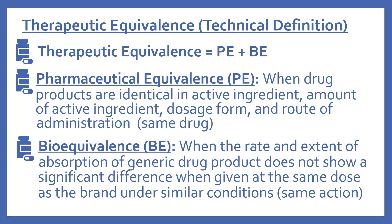Bioequivalence, abbreviated BE, is when the rate and extent of absorption of a generic drug product does not show a significant difference when given at the same dose as the brand under similar conditions. You can think of bioequivalence as meaning the generic and brand drug show the same action. So for products to be therapeutically equivalent, they must have both pharmaceutical equivalence and bioequivalence.